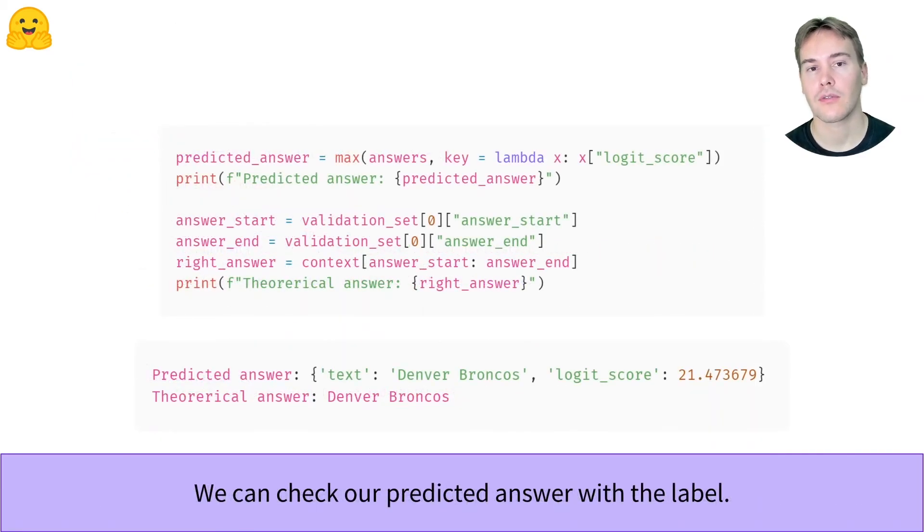Let's have a look at the predicted answer for the first feature, which is the answer with the best score, or the best logits score since the softmax is an increasing function. The model got it right!